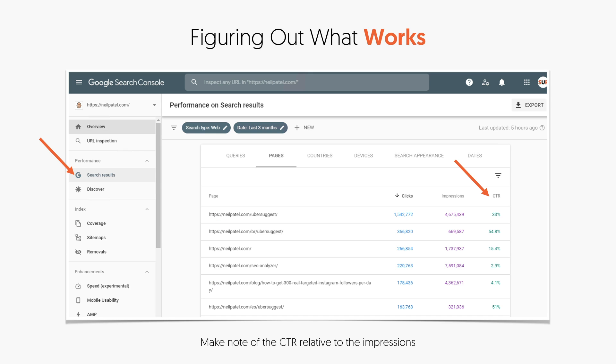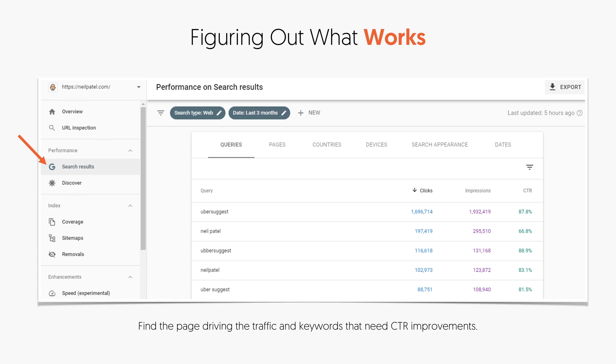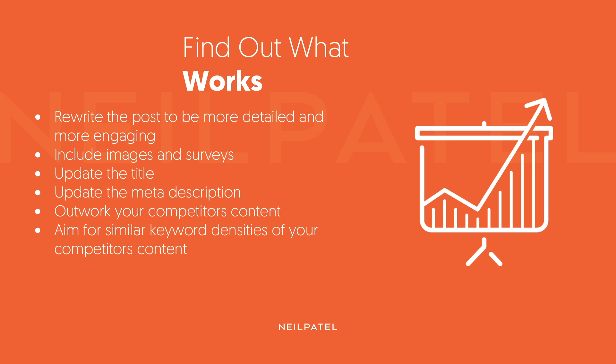When you go into Search Console and log in — set it up if you haven't already — click on Search Results. You can see the CTRs, which pages are getting the highest click-through rate, which ones aren't, and how you can improve them. Typically that involves adjusting your title tags — that's how you increase your click-through rate. To improve your click-through rate, rewrite your post content to make it more engaging, and include the keywords you're getting impressions for in Search Console but aren't ranking highly for. Include images, surveys, update your title, and update your meta description.